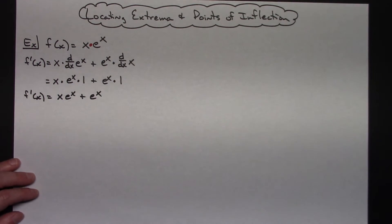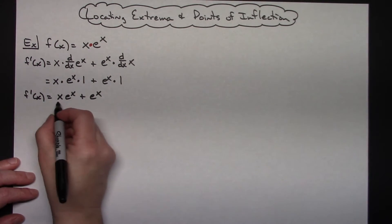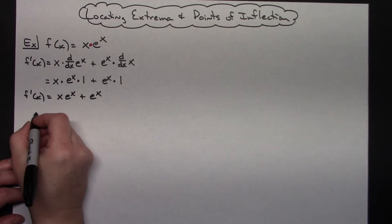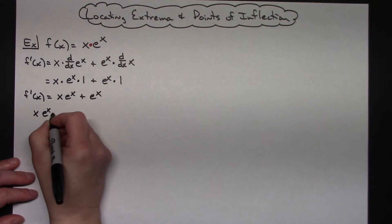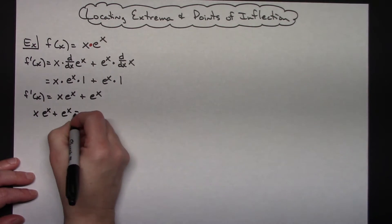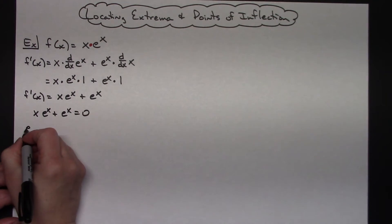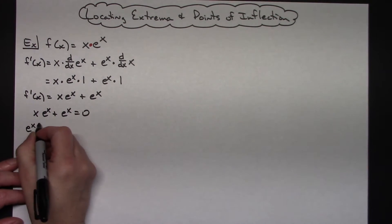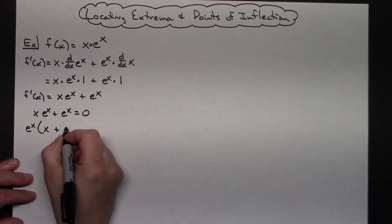Now if I'm trying to find extrema, I need to set that equal to 0 and solve. So I'm setting x e to the x plus e to the x equals 0. I'm going to factor out an e to the x, giving e to the x times the quantity x plus 1.